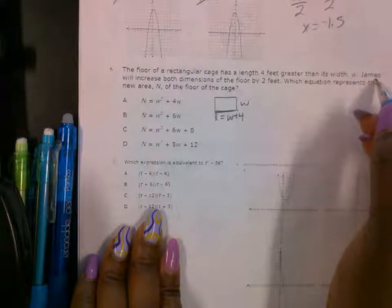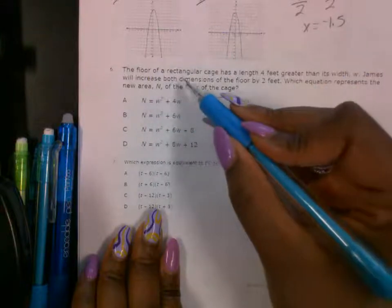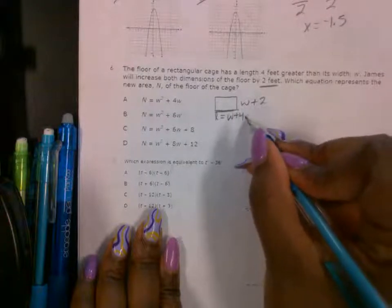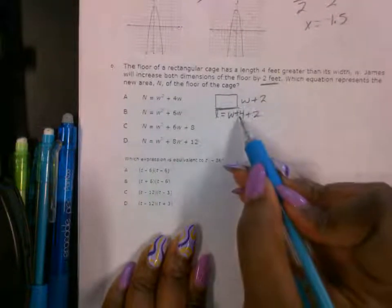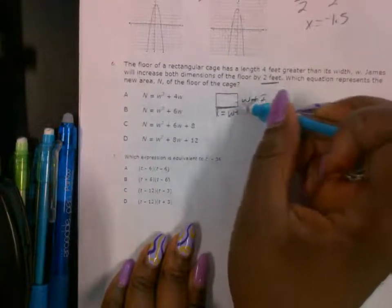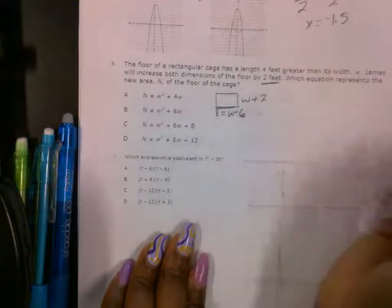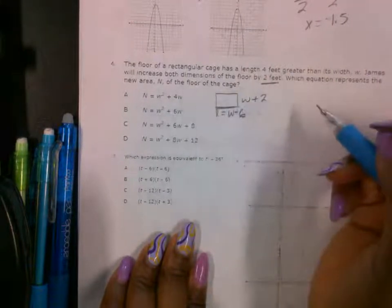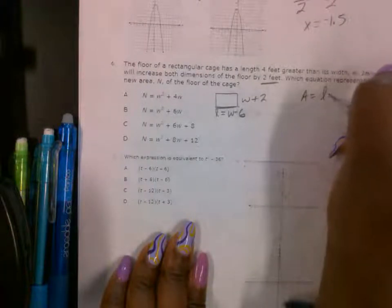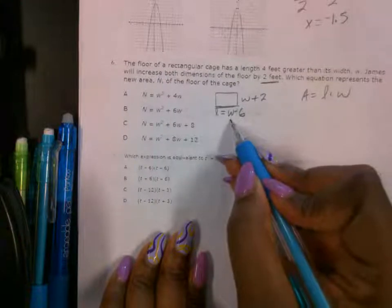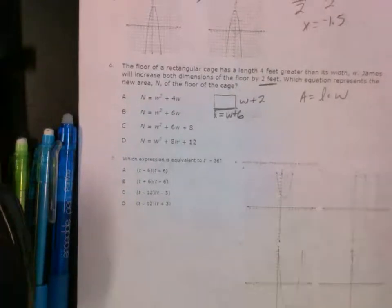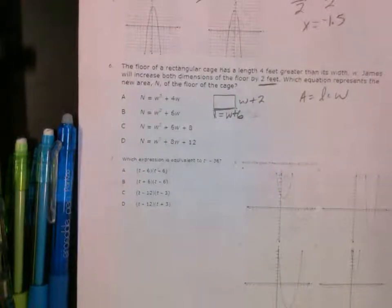The second sentence is saying James will increase both dimensions by 2 feet. So that means I'm going to add 2 feet to the width, and I'm going to add 2 feet to the length. So I can combine this together. So 4 plus 2 is going to give me 6 now. Which equation represents the area of the rectangle? Remember, the formula for area of a rectangle is length times width. So I'm going to take these and substitute them into the formula. Hold on just one minute.